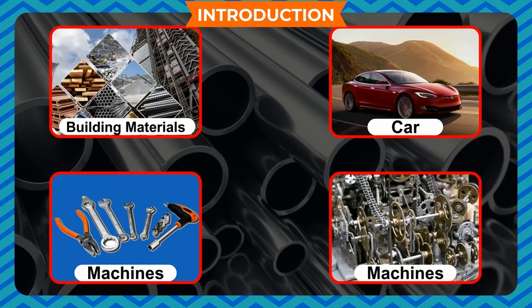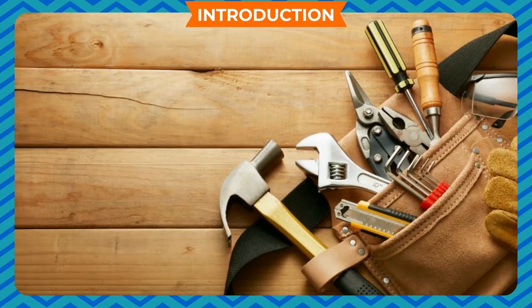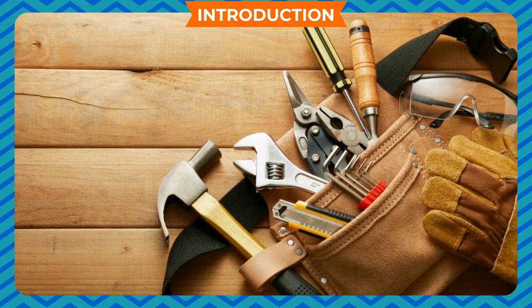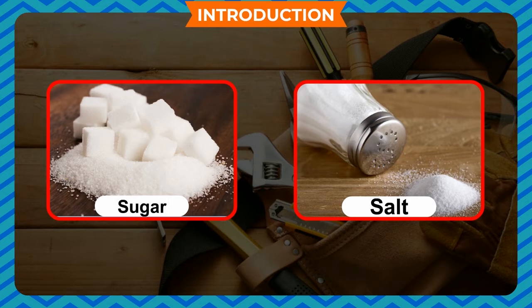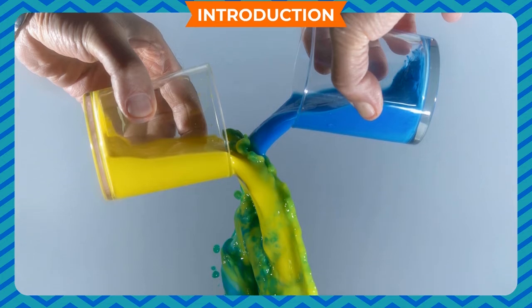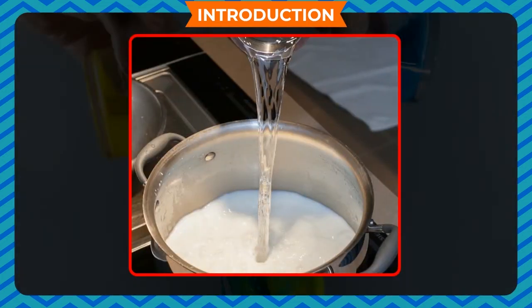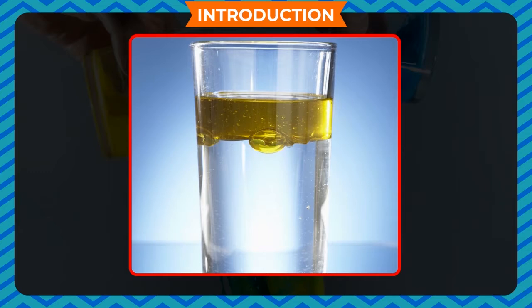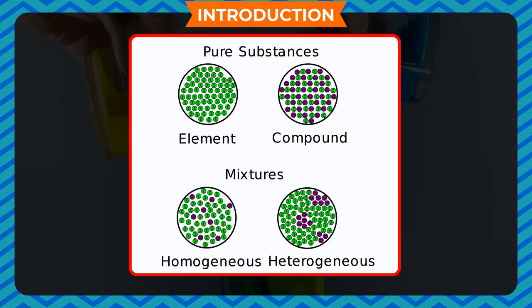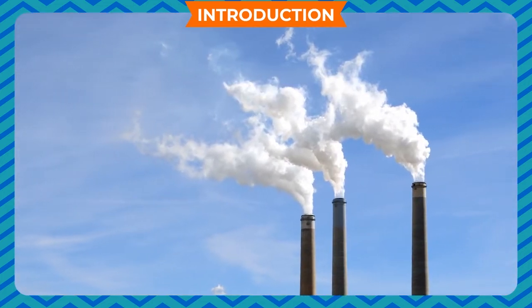These mixtures are usually classified on the basis of the state of the substances present in the mixture. If a mixture consists of more than one solid substance, the resulting mixture is called a solid mixture — for example, a mixture of iron and carbon in steel, or a mixture of sugar and salt. A mixture of more than one liquid substance is called a liquid mixture, and a mixture of more than one gas is called a gaseous mixture — for example, atmospheric air.